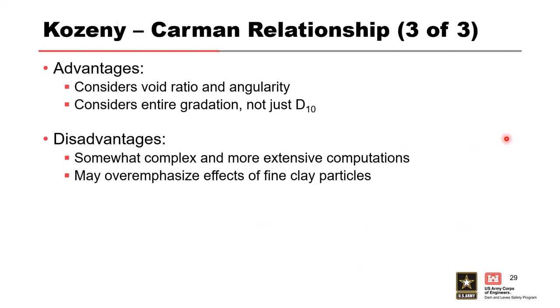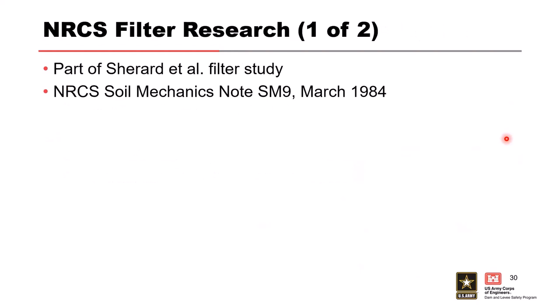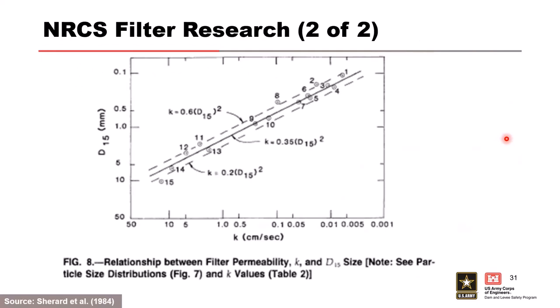Whether one method is better than another is hard to tell. The NRCS did extensive work in the 80s on filter compatibility evaluations. In addition to filter evaluations for various soils, they also measured permeability and plotted those results in their Soil Mechanics Note 9, published in 1984. They plotted permeability versus D15. This is only applicable to those specific soils — D15 range of about 0.1 to 5 millimeters. They show minimum, maximum, and mean ranges.